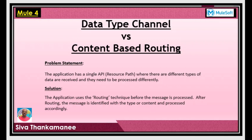The problem statement is: you have one application or one single receiver where you are getting data, but the channel is giving different types of data and you might need to process them differently based on the type of data. You need to determine what to do once the message is received into an API, and only then you can decide and process accordingly. The solution is by using routing — MuleSoft has the routing principle and you can easily take the data or content and then process them by routing to the appropriate message flow.